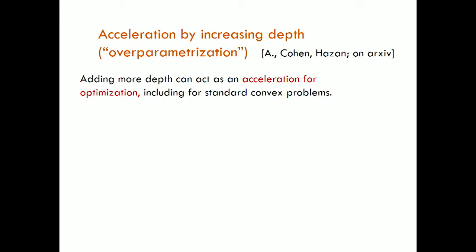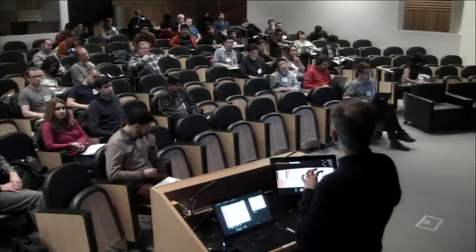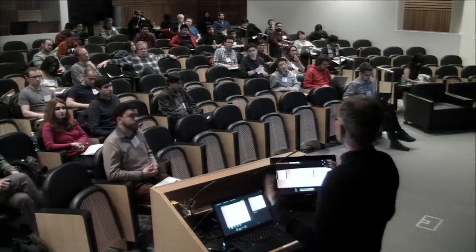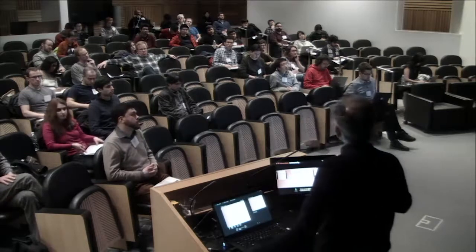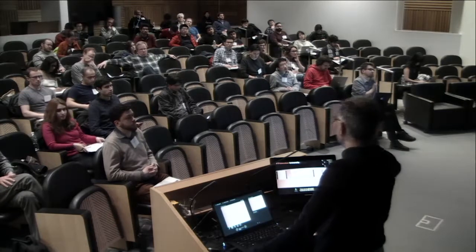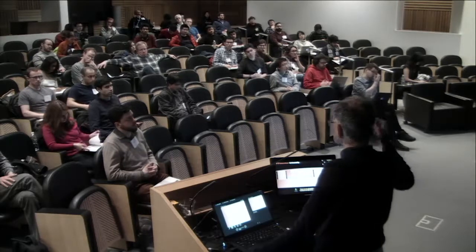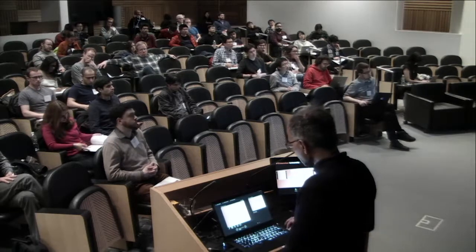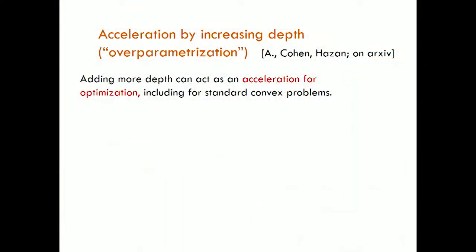We are suggesting that adding more depth can act as an acceleration for optimization. Acceleration here is a technical word in optimization theory — in the last 20 years there's a technique called Nesterov momentum, which is the idea that you don't just do gradient descent but also keep track of past gradients. Your movement direction is a function of all past gradients. This can be shown for convex optimization to accelerate — the rate of convergence is quantitatively different than for gradient descent.